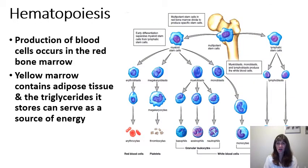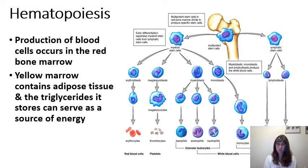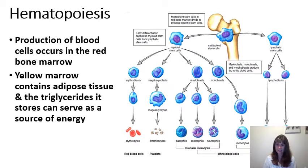Hematopoiesis is the formation of blood cells. This occurs in the red marrow in bone. Red marrow is comprised of reticular connective tissue. Not only are red blood cells — erythrocytes — produced by the red bone marrow, but also our leukocytes, which are white blood cells that play a critical role in our immune system. Bone also contains yellow marrow because it contains adipocytes, where triglycerides are stored, serving as a storage site for energy.